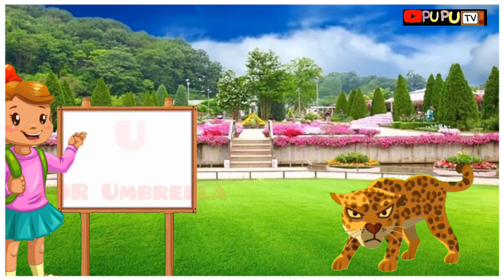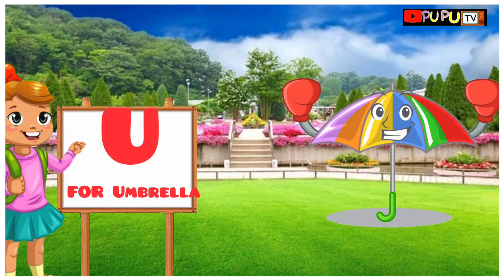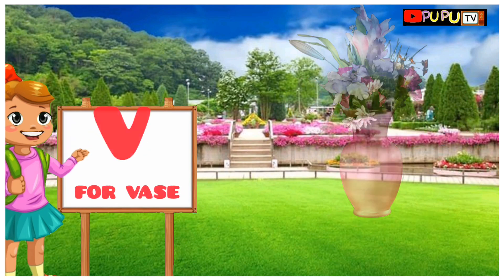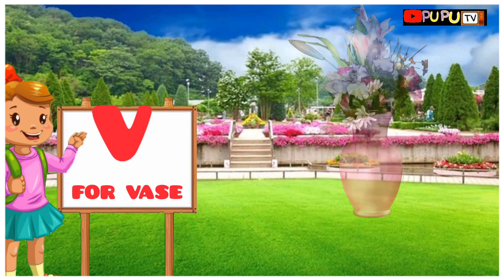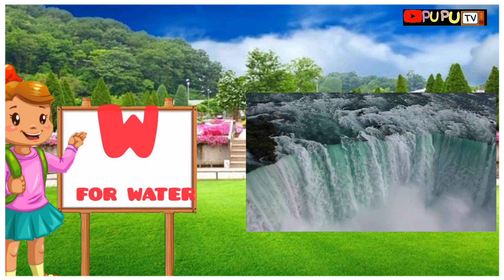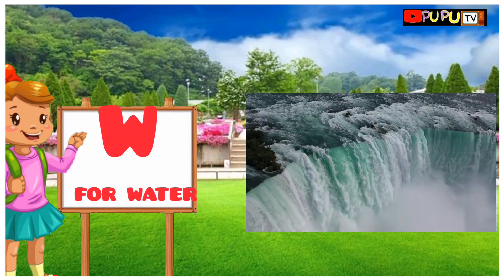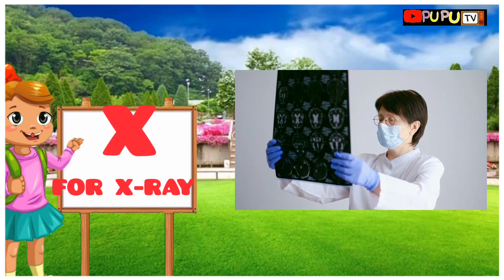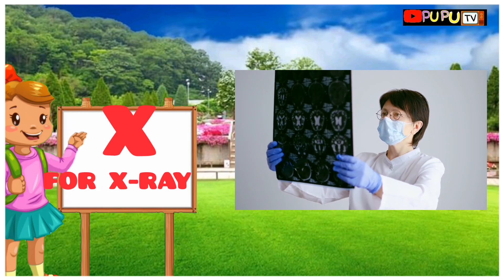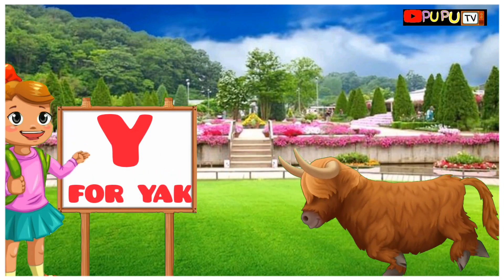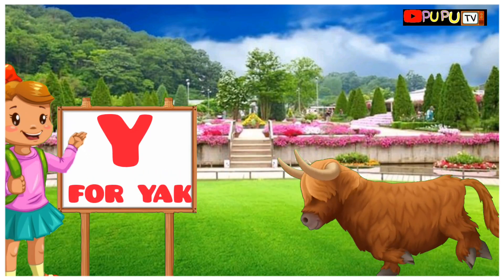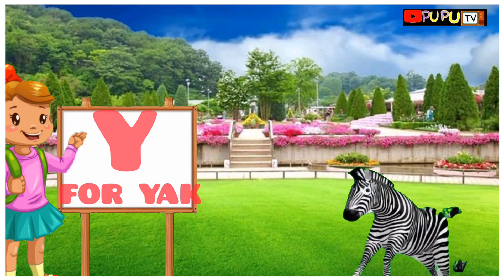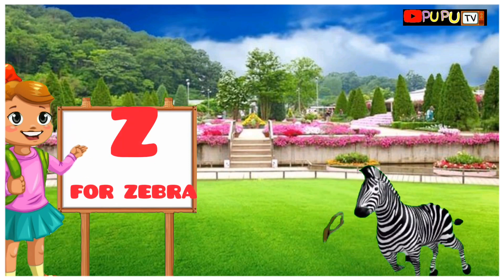U for umbrella, V for vase, W for water, X for x-ray, Y for yak, Z for zebra.